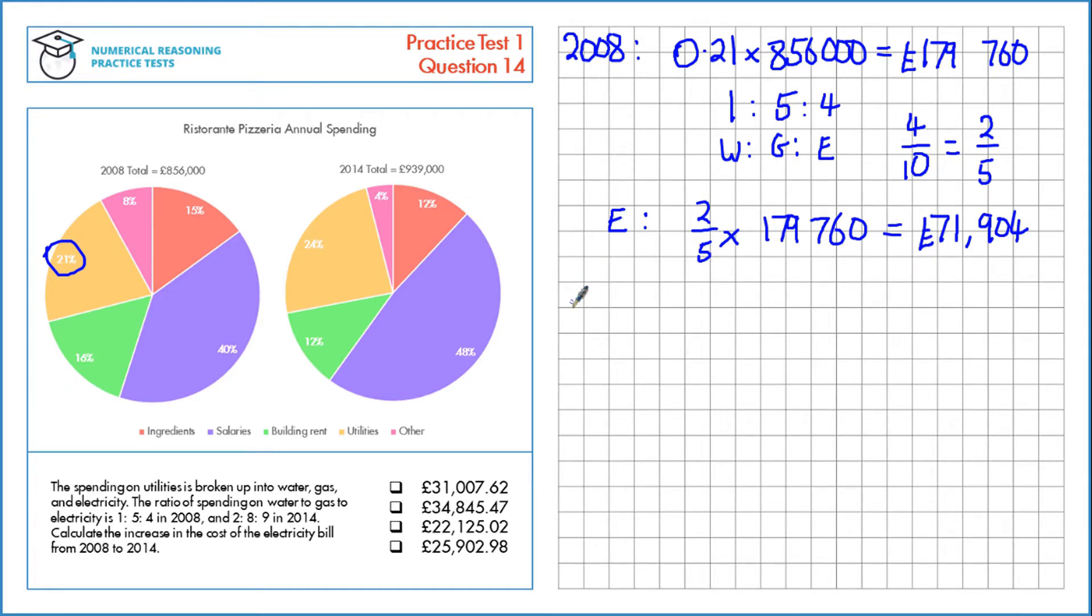Let's make a similar calculation for 2014. The only difference being in 2014 we have 24% here, and the ratio is different, but we do it the same way. So we look for the ratio in 2014, we have 9 parts out of a total of 19 parts, so it'll be 9 over 19.